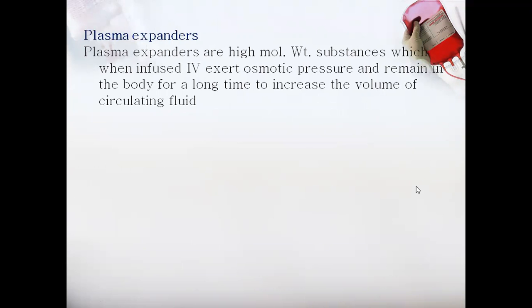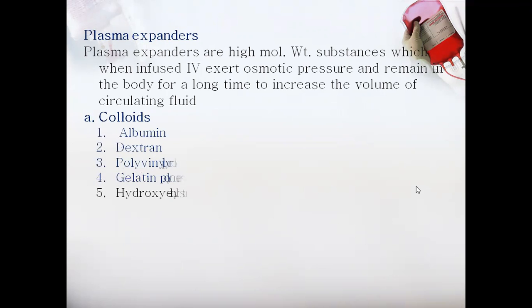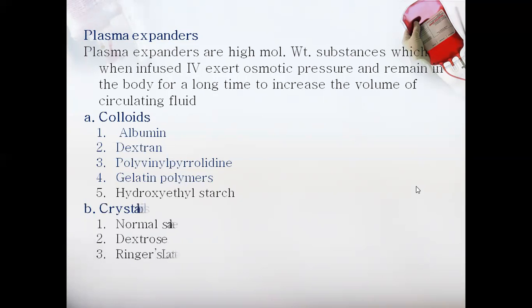Plasma volume expanders are high molecular weight substances that exert osmotic pressure and remain in the body for a longer time to increase the blood circulatory fluid. The first class is colloids, which includes albumin, dextran, polyvinyl pyrrolidone, gelatin polymers, and hydroxyethyl starch. The second category is crystalloids, which are more common agents such as normal saline, dextrose, and Ringer's lactate.